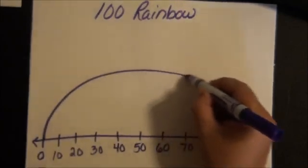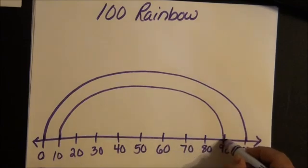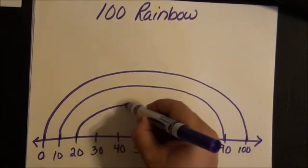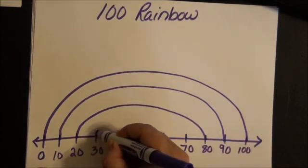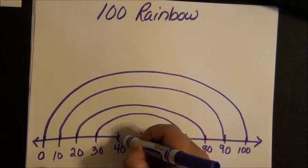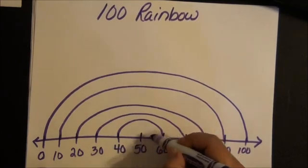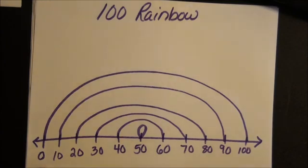So you go 0 plus 100 is 100, 10 plus 90 is 100, 20 plus 80 is 100, 30 plus 70 is 100, 40 plus 60 is 100, and 50 plus 50 is 100.